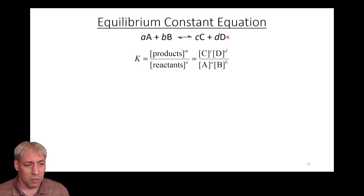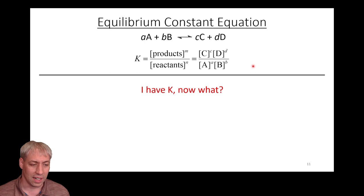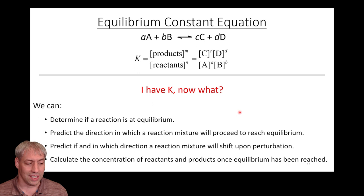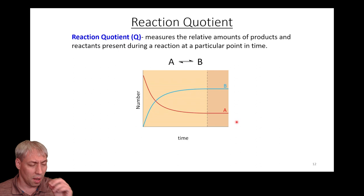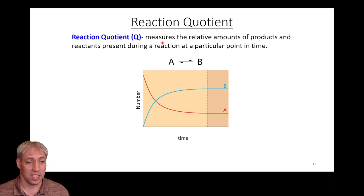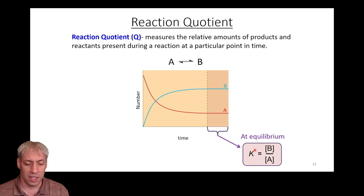This equilibrium constant equation is really useful — it tells you if a reaction is favoring products or reactants. You can determine if a reaction has reached equilibrium, and also predict which way the reaction will shift to reach equilibrium. You can perturb the reaction to make it shift in any direction you want, making K a really valuable tool. We'll cover those first two in this video. One useful abstraction is the reaction quotient, which tells you where the system is in relation to equilibrium. The formal definition: it measures the relative amounts of products and reactants present during the reaction at any particular point in time.